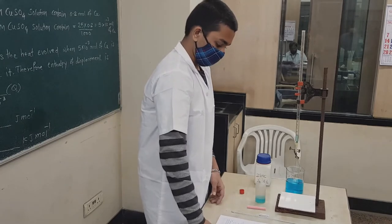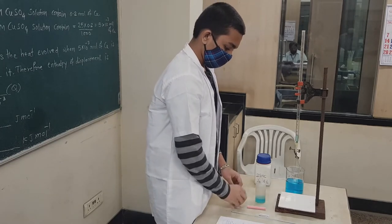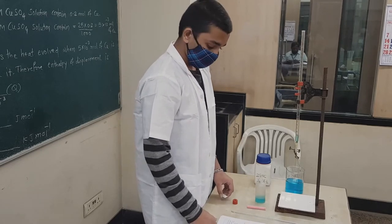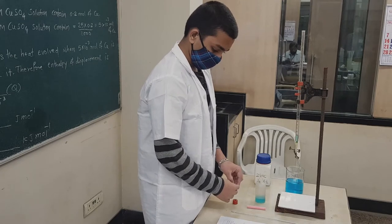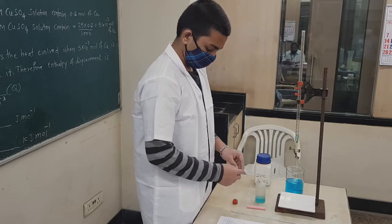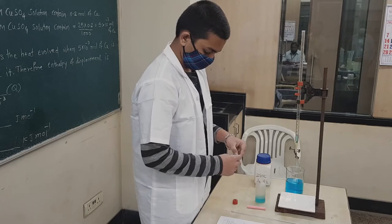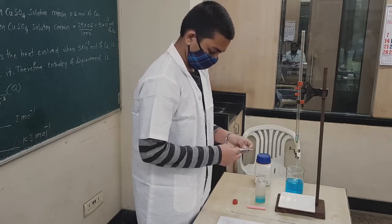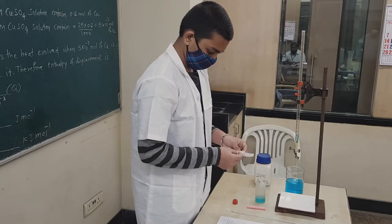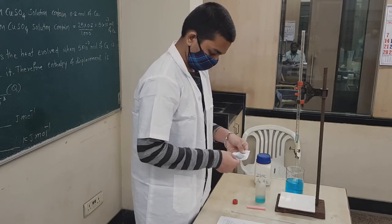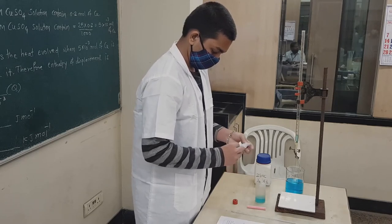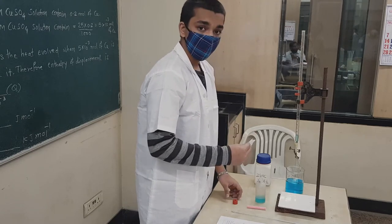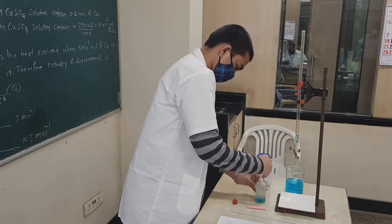The initial temperature is recorded and we will write that in the observation table. Now step number 3: we have to open the packet and put the zinc powder into the copper sulfate solution very carefully. The moment you put the zinc powder into the copper sulfate solution, you have to cork it immediately and shake the mixture so that heat will be generated. The amount of heat generated will be measured in terms of rise in temperature.